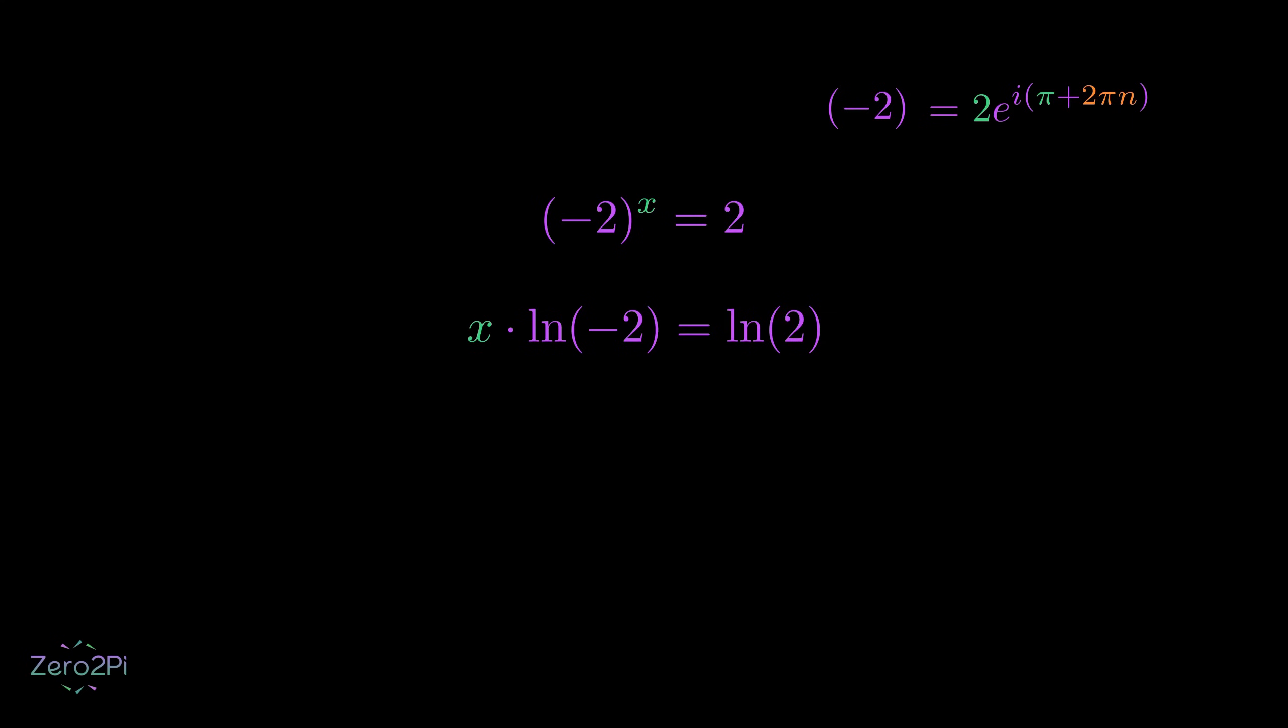For any complex number z, the natural log of z equals the natural log of its magnitude plus i times its argument. For negative 2, that distance is 2, and we figured out that the angle is pi plus 2 pi n. Now I can substitute this back into our equation.